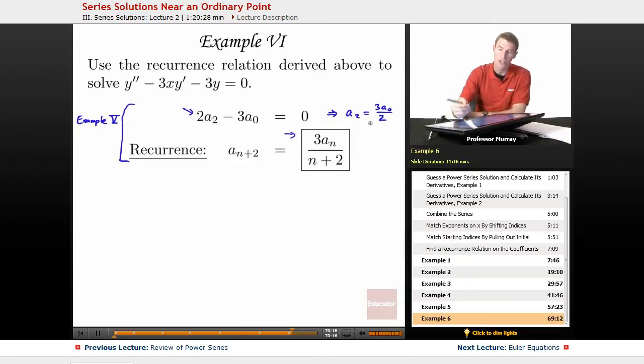So we get A2 in terms of A0, and we get AN+2 in terms of AN, and that was for N being greater than or equal to 1. That again was coming from example five.